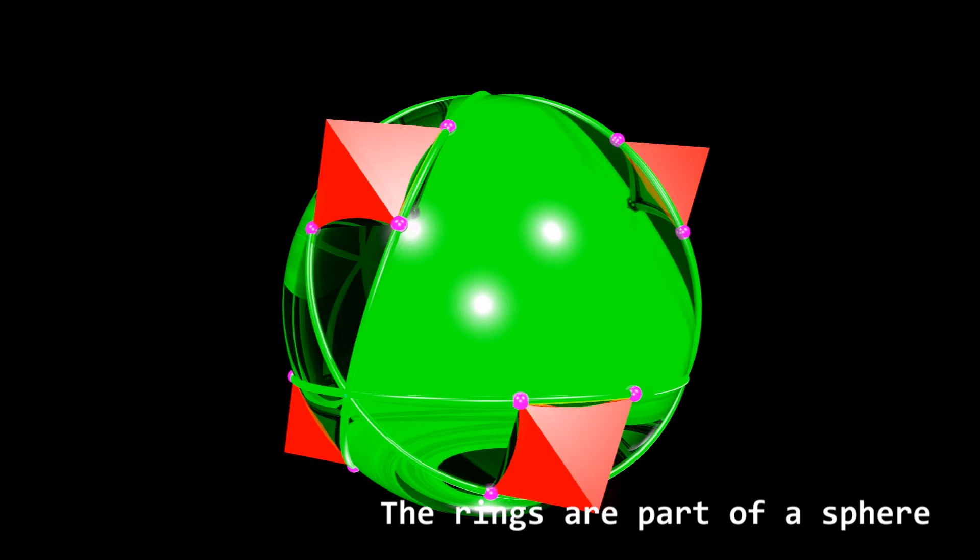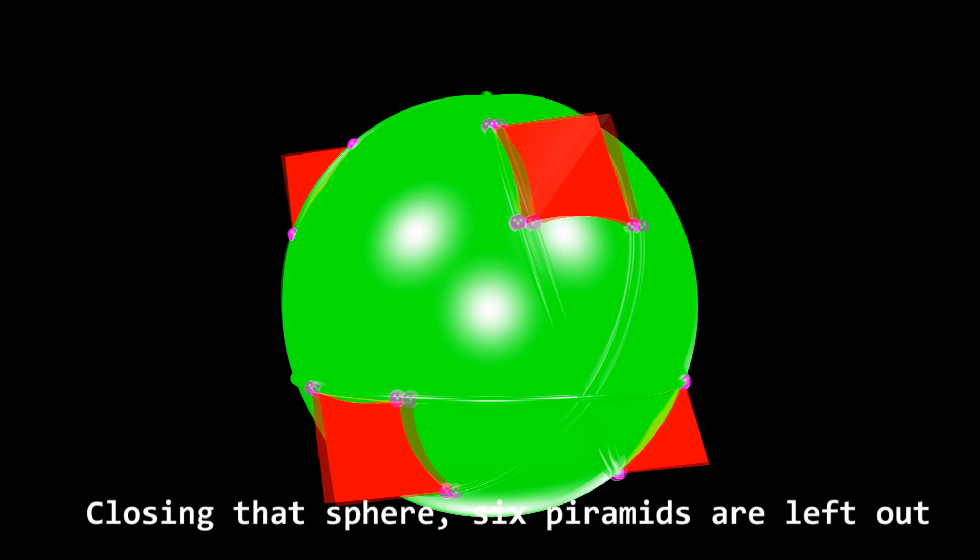The rings are part of a sphere. Closing that sphere, six pyramids are left out.